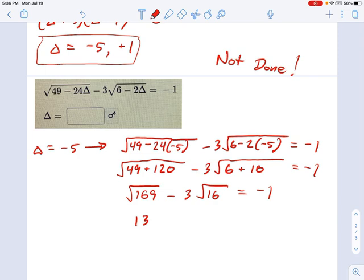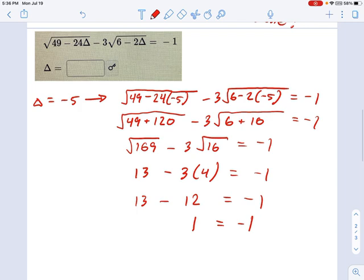The square root of 169 is 13. The square root of 16 is 4. So here's what this is saying. 13 minus 12 is negative 1. 13 minus 12 is 1. So looks like we found our first extraneous solution.